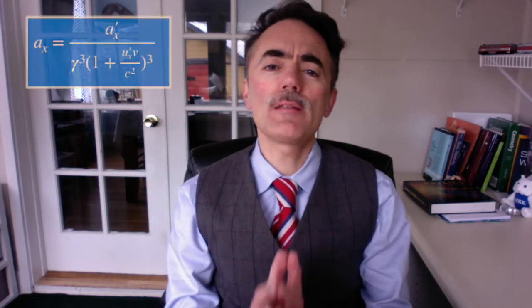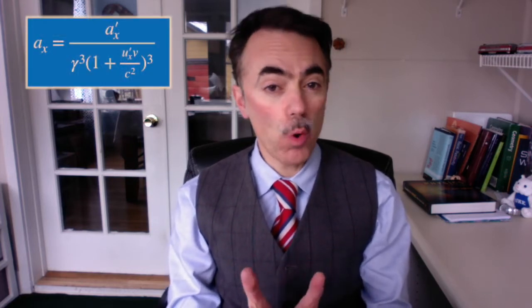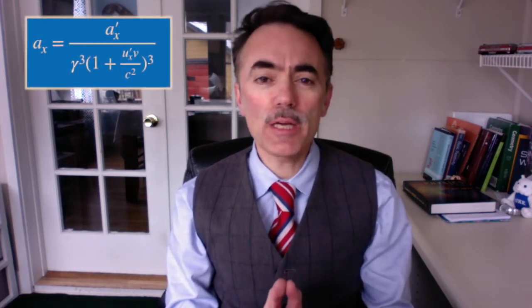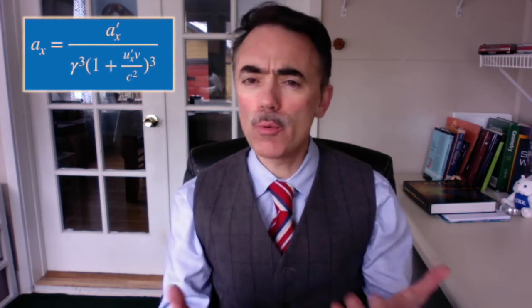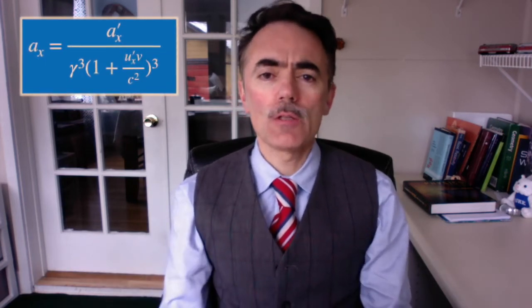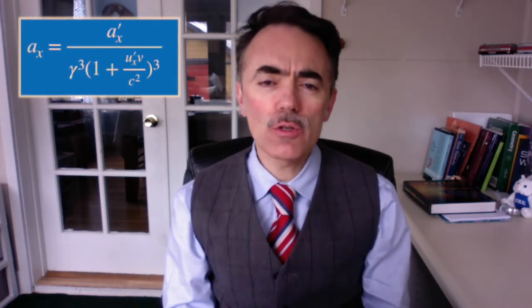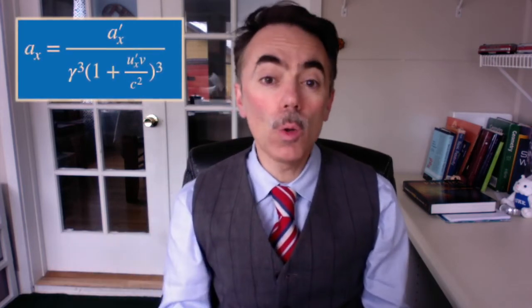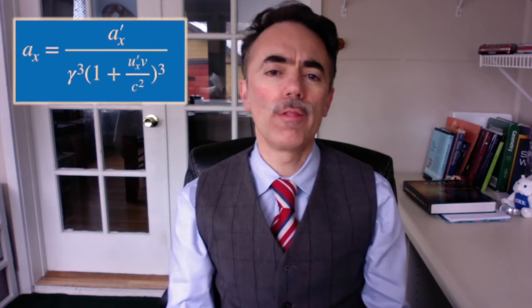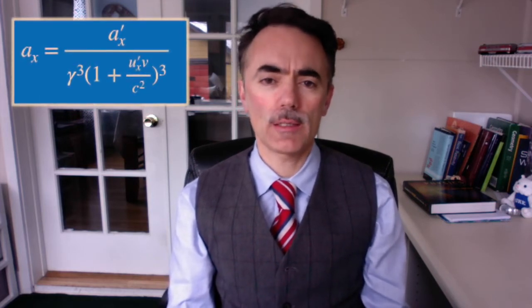So look at this final result: we have that the acceleration as measured from the rest frame is that of the moving frame s prime, divided by gamma cubed, and this factor of 1 plus u prime x times v over c squared. So this acceleration measured on the station depends on the acceleration measured on the train, but also on the speed measured on the train, u prime x.